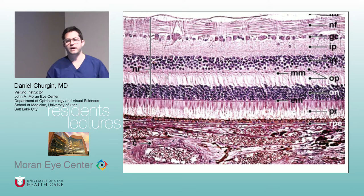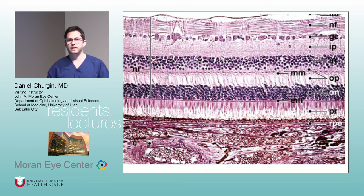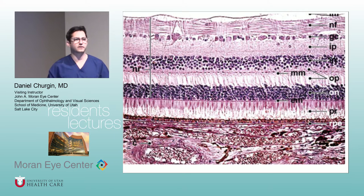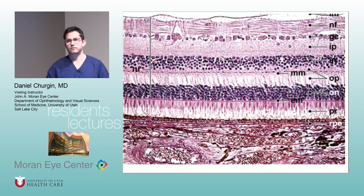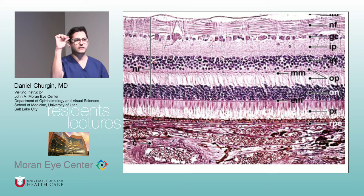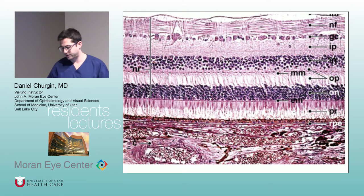Sometimes they'll pair diabetic-looking changes with an iris — they'll either show you neovascularization of the iris, or they may show you lacy vacuolization of the iris. Those are things I've seen pop up on OCAPs over the years. Lacy vacuolization is where you have these lacy, almost cystic changes of the pigmented iris. I don't have a picture of it, but you can look that up.